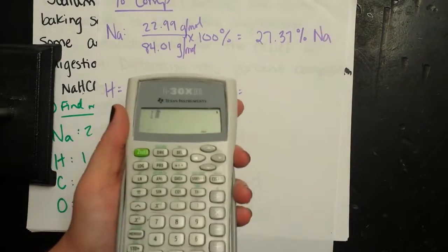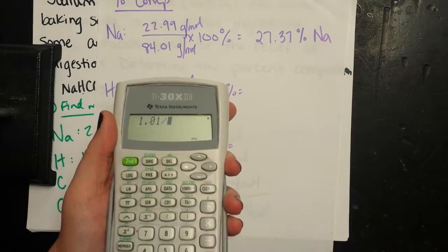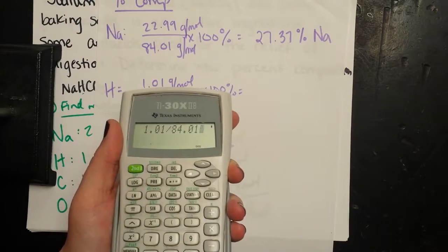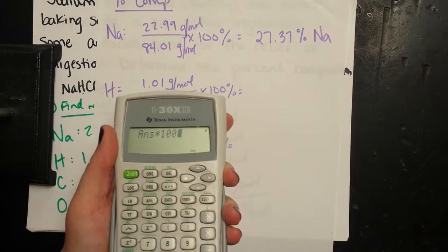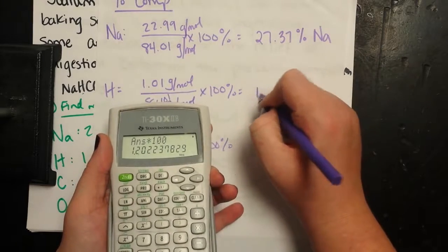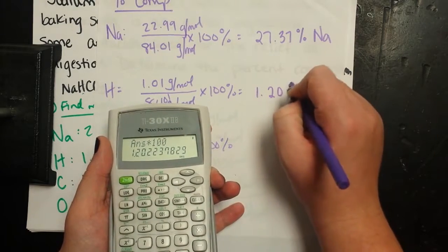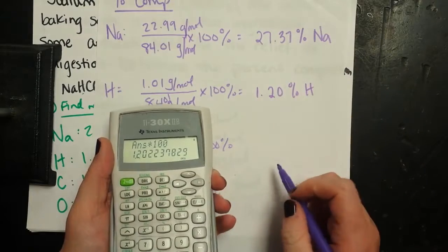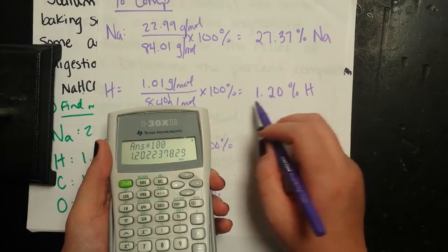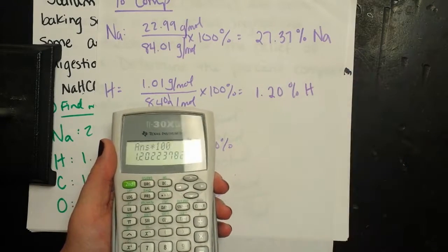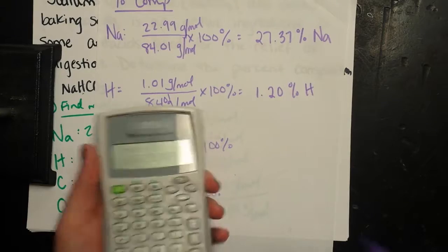For hydrogen, I'm going to take 1.01 and divide it by 84.01 and multiply it by 100. So 1.2% hydrogen. So hydrogen contributes 1.2% of sodium bicarbonate's mass.